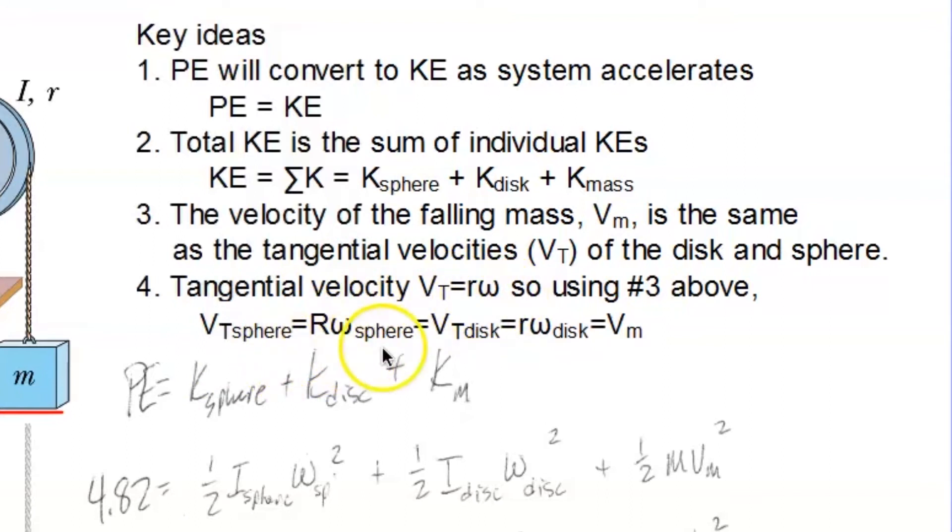vt equals r omega. But that's also the same as the tangential velocity of the disk. So that's r omega of the disk, which is the same as the velocity of the falling mass. Note that capital R is the radius of the sphere, and little r is the radius of the disk.